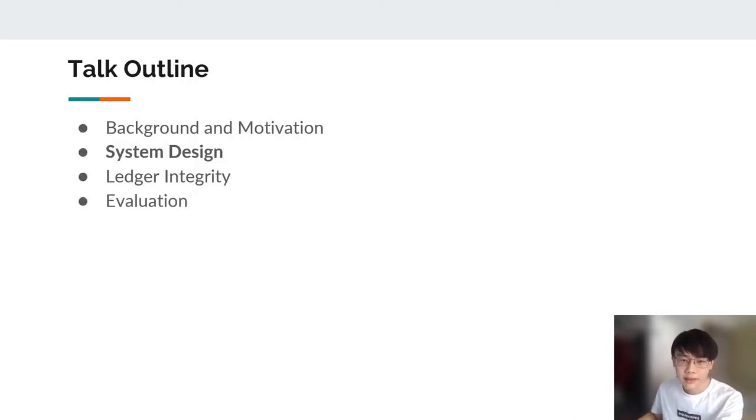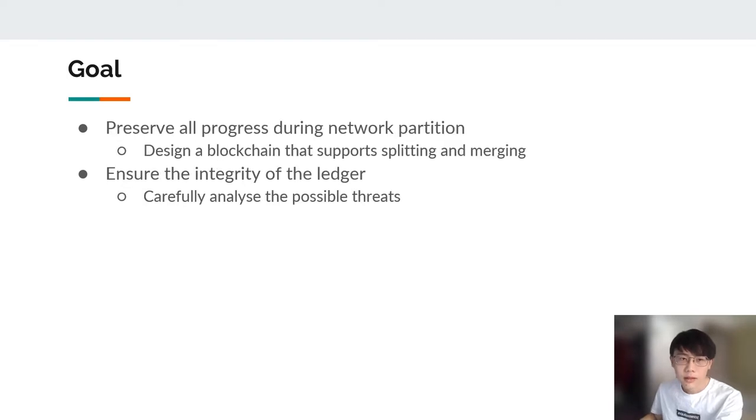Now, we will talk about the system design of our PeloPartition. The goal of our system is to preserve all progress during a network partition. It is done by designing a blockchain that supports splitting and merging. We also need to ensure the integrity of the ledger. For example, make sure that there is no conflicting transactions. We carefully analyze the new threats introduced by our new design and provide solutions to them.